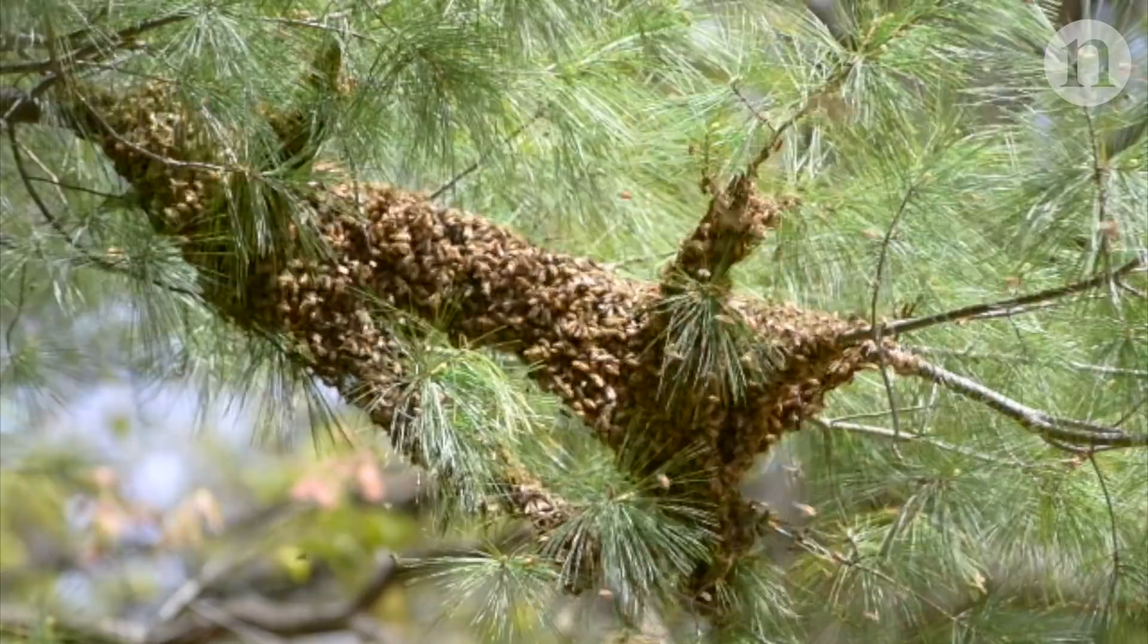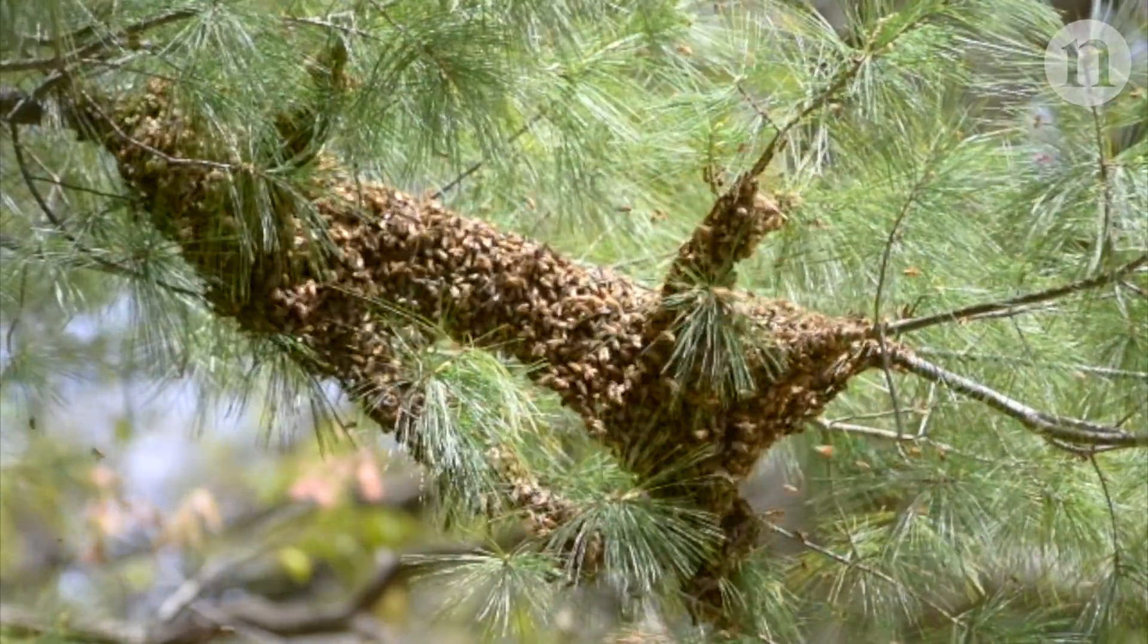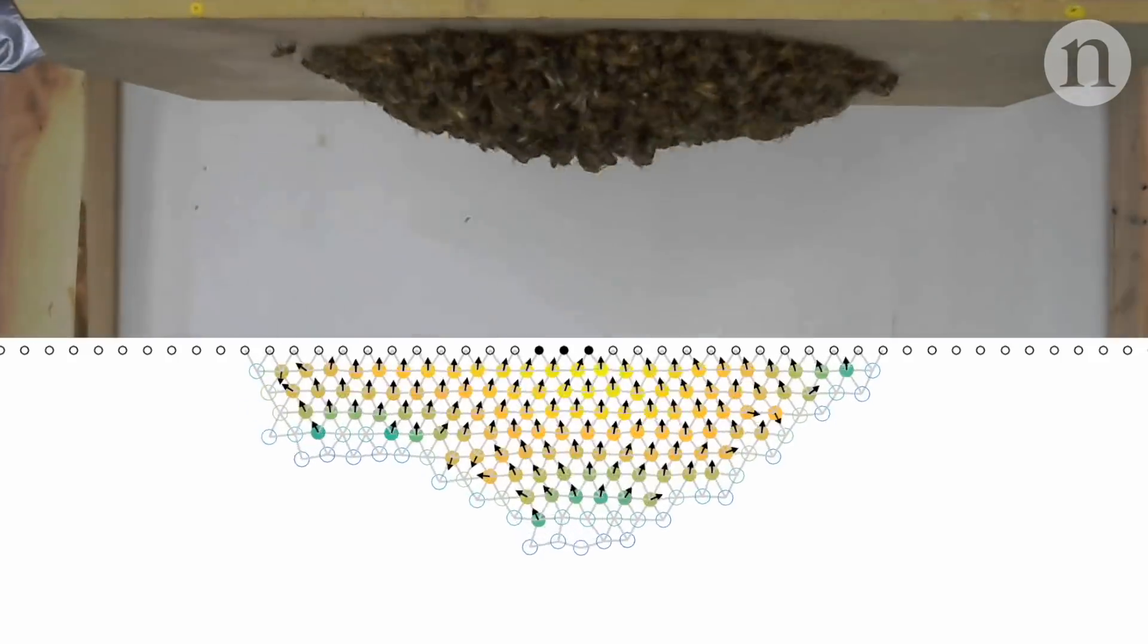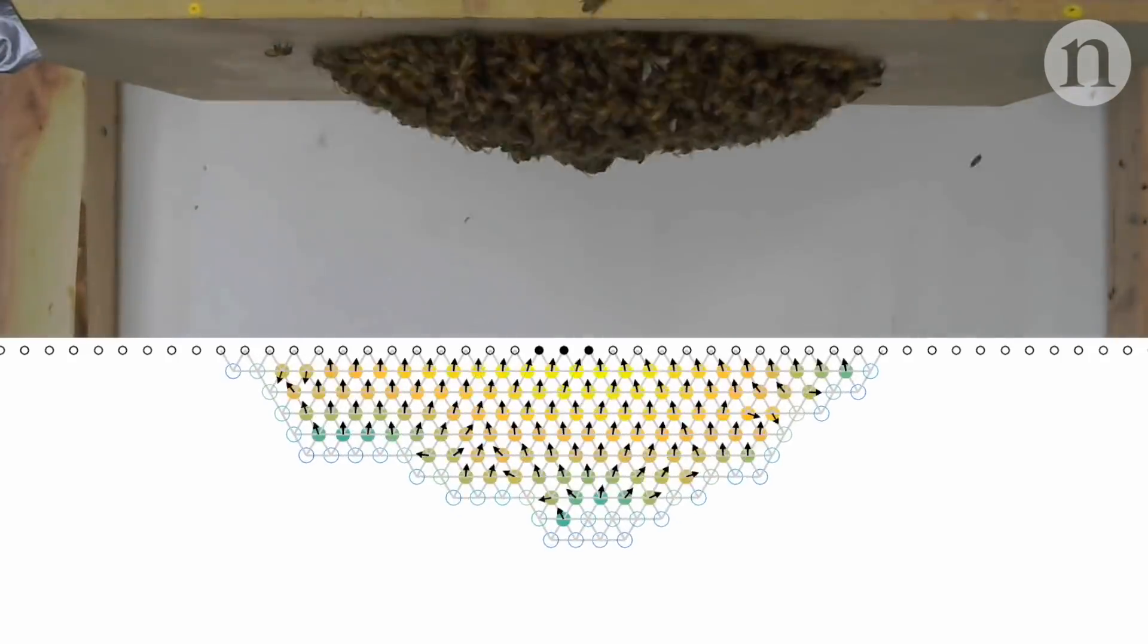What's more, even though each individual bee doesn't necessarily know what's going on, by simply moving towards an area of higher stress, the colony as a whole acts intelligently. This is called emergent intelligence,